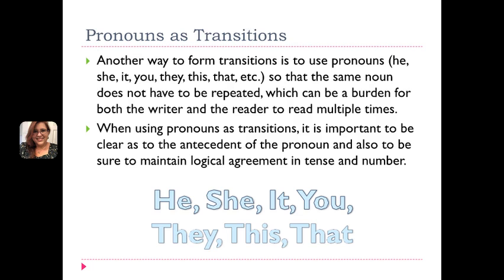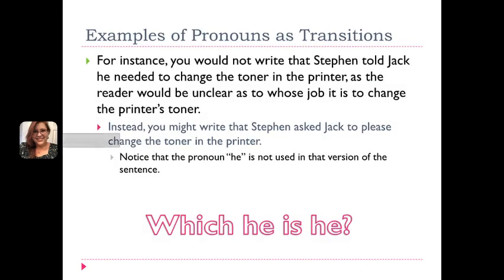We want to make sure that our pronoun and the antecedent — the word that the pronoun is taking the place of — match, and that we have logical agreement in tense and number. For instance, you would not write that Stephen told Jack he needed to change the toner in the printer, as the reader would be unclear as to whose job it is to change the printer's toner. Instead, you might write that Stephen asked Jack to please change the toner in the printer, and we don't even use the pronoun he in that version because it would just be too confusing.